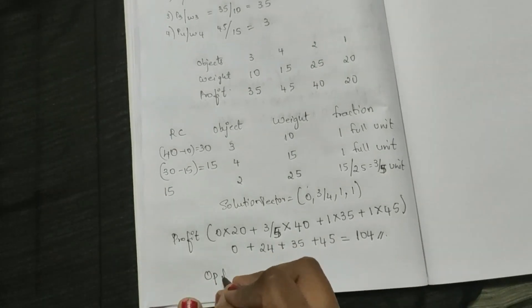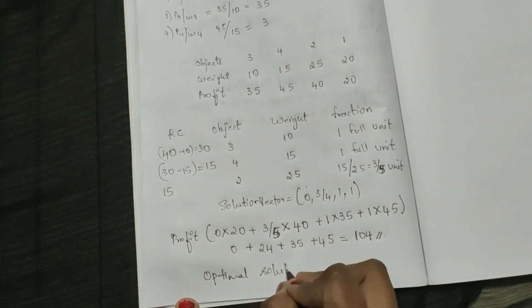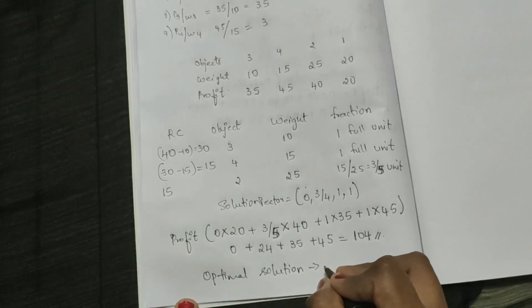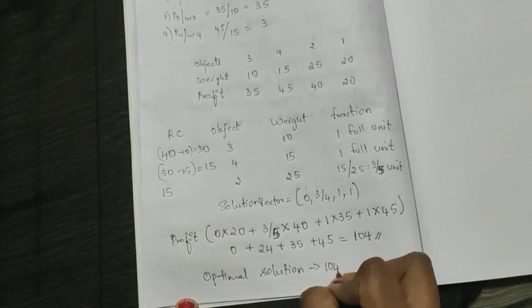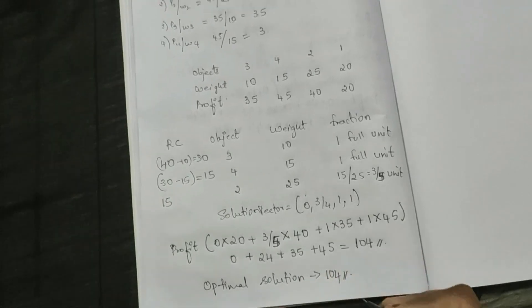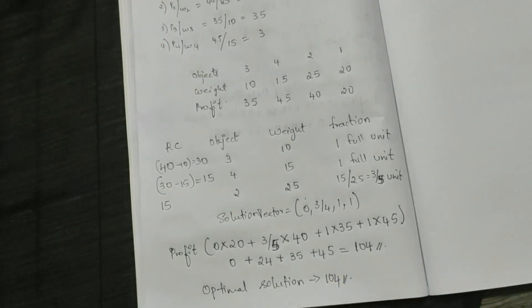The optimal solution is found using the third strategy, based on decreasing order of profit-to-weight ratio. This is how you solve the knapsack problem, also known as fractional knapsack. Thank you for watching — please subscribe, like, and share.